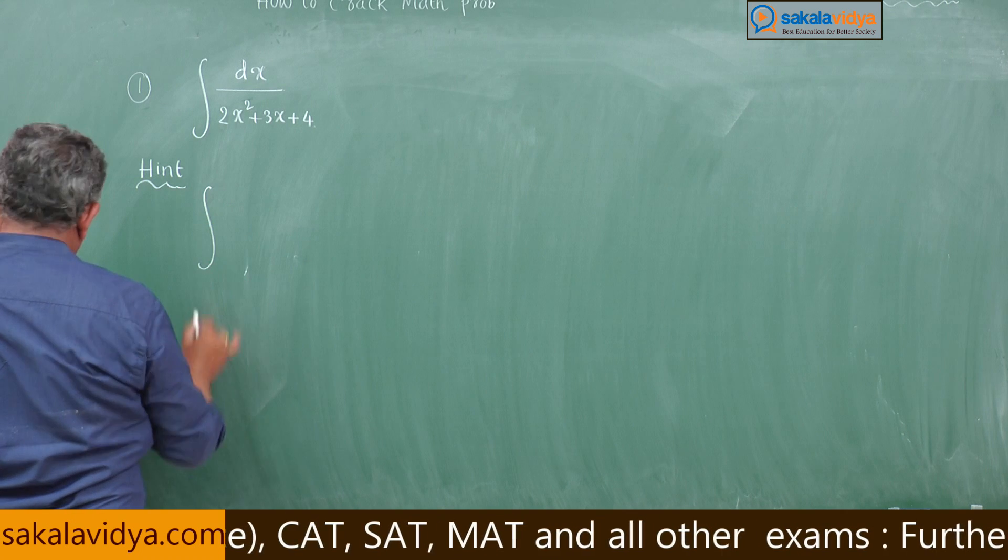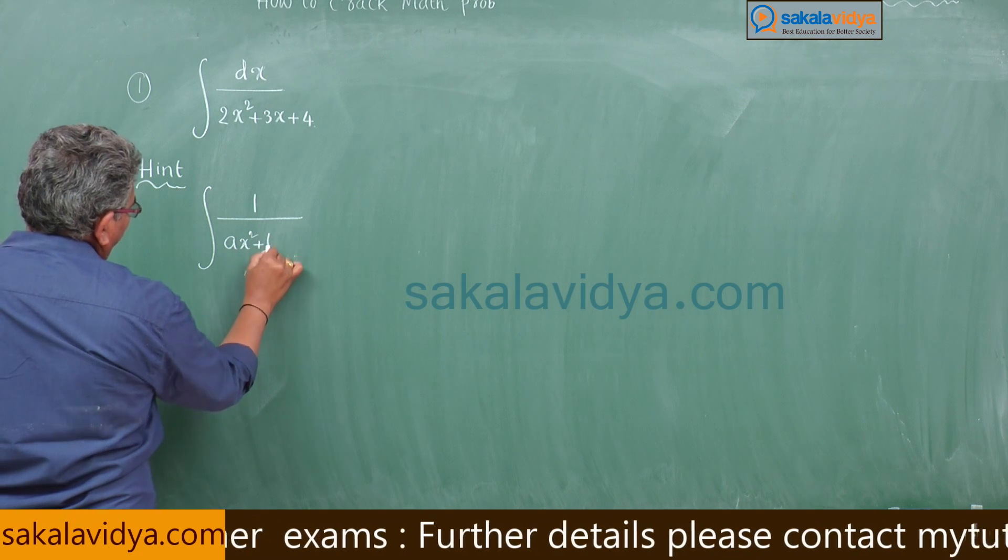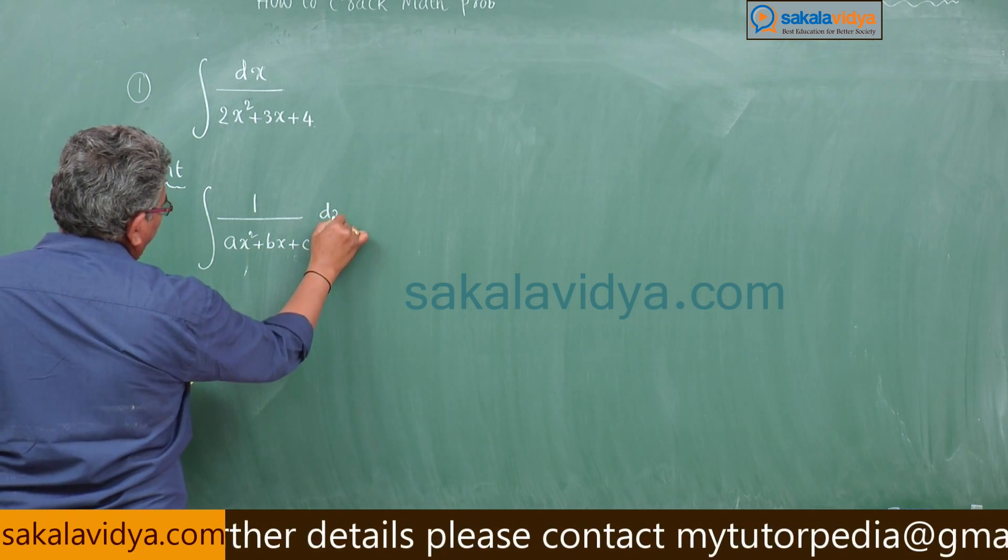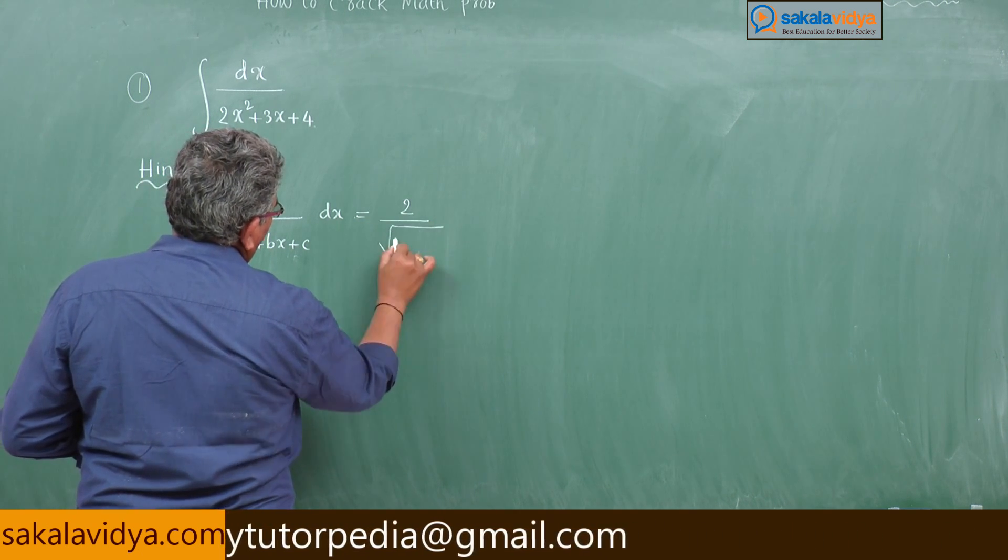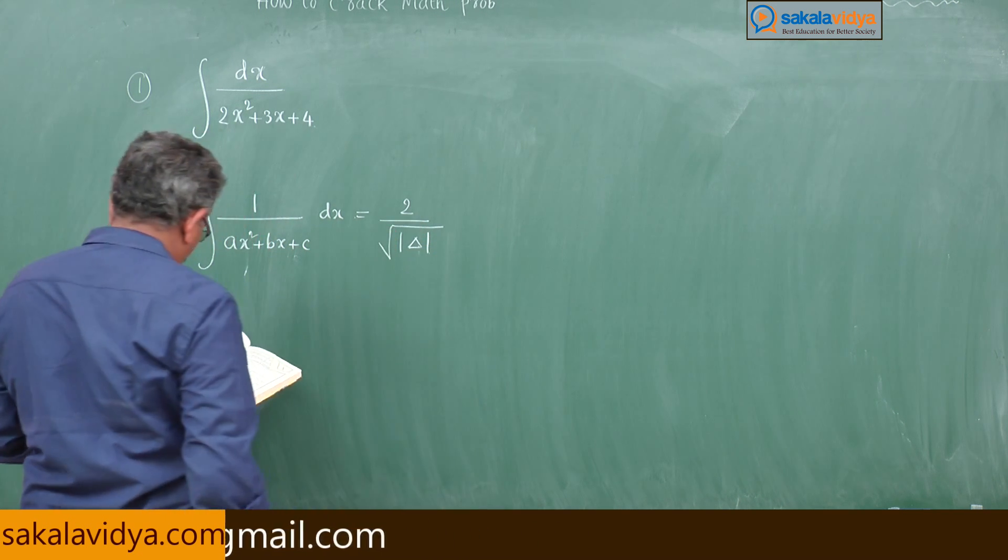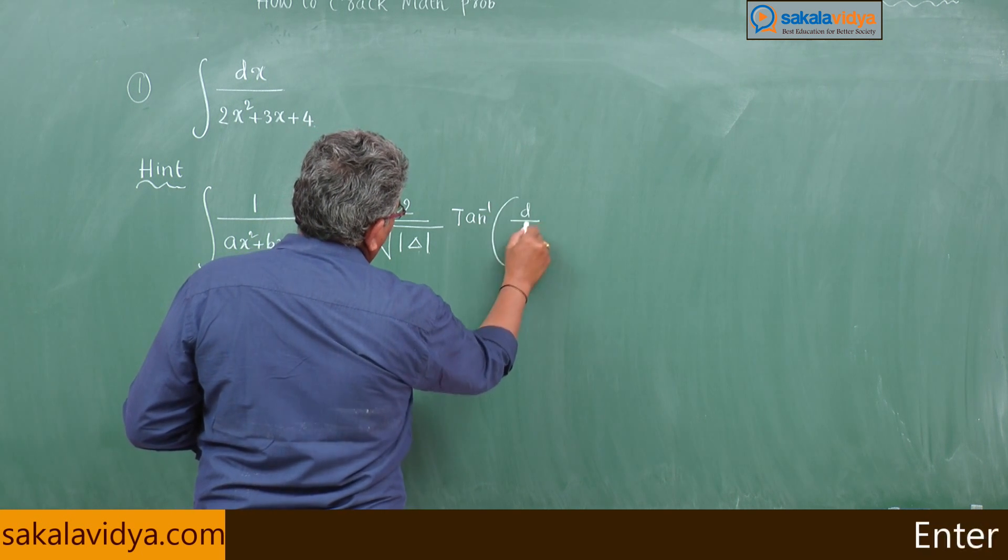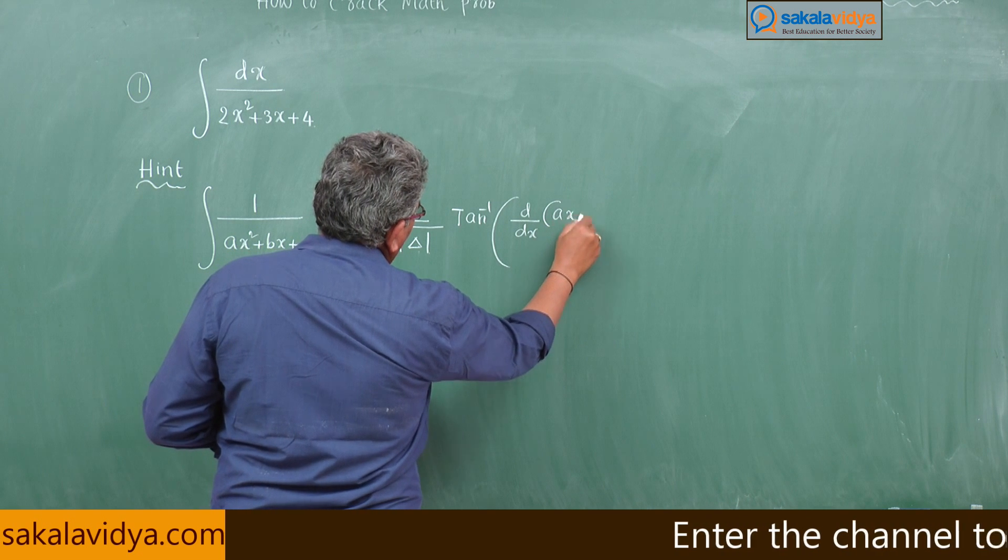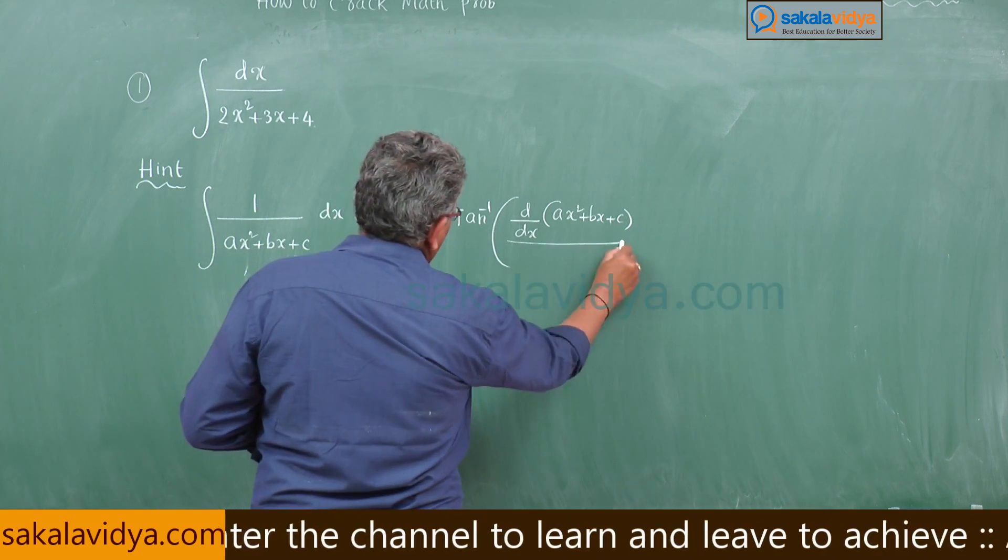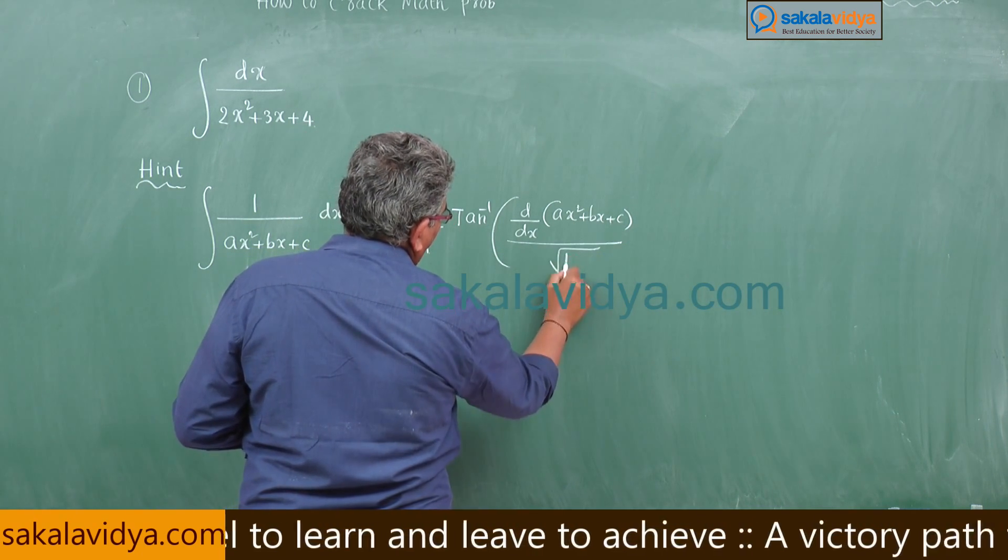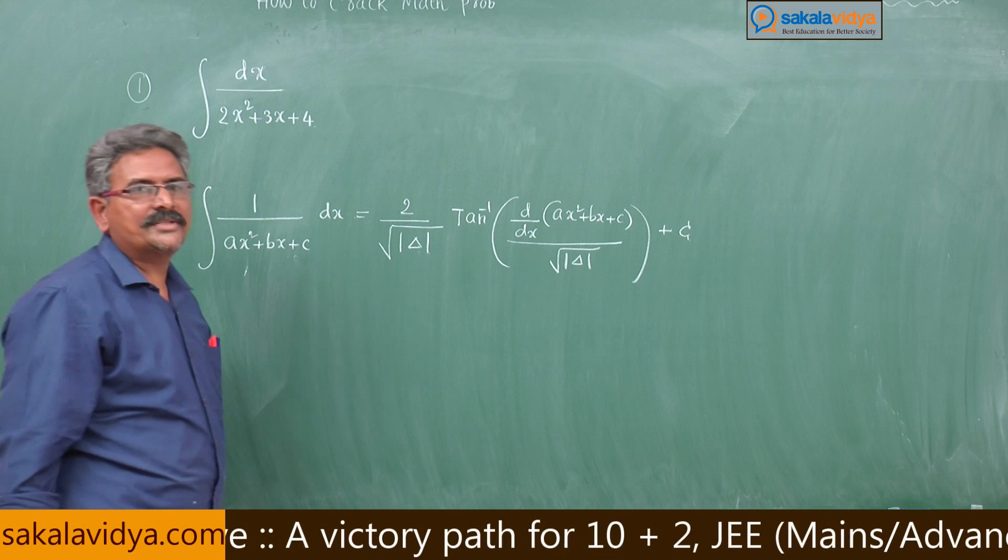Integral 1/(ax² + bx + c)dx = (2/√|Δ|) tan⁻¹[(d/dx of ax² + bx + c)/√|Δ|] + c, where delta stands for b² - 4ac.